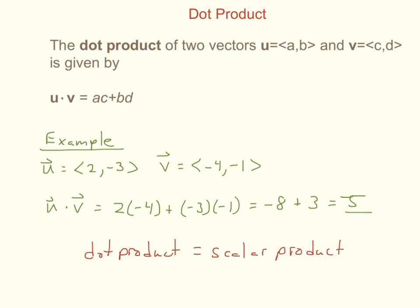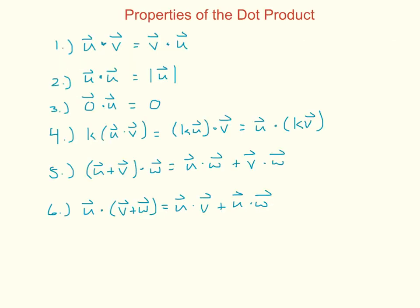Our book will refer to it as the dot product, but I do know other books and other professors in college that did refer to it as the scalar product. There are properties associated with the dot product, like the properties we dealt with last time dealing with vector addition and scalar multiplication.